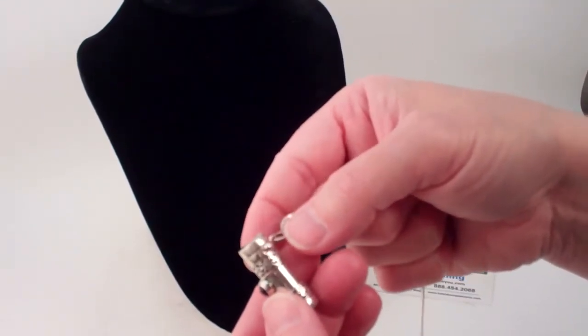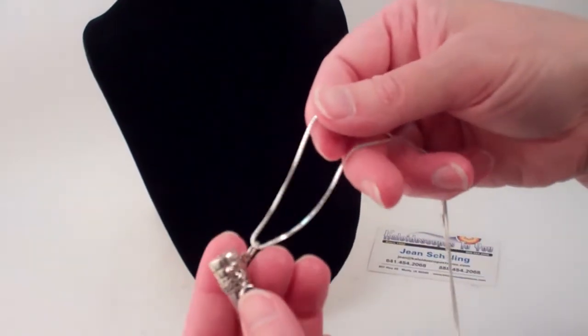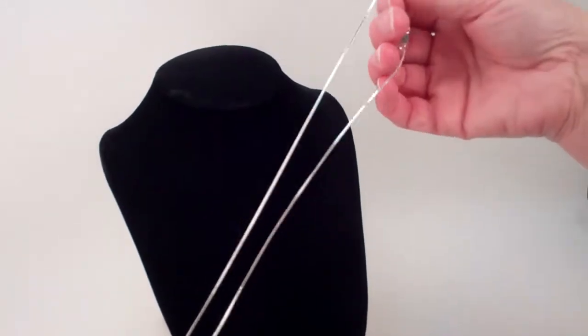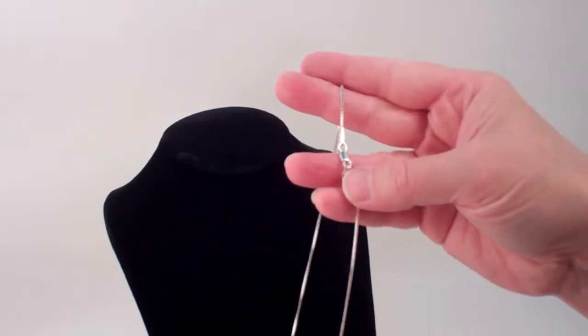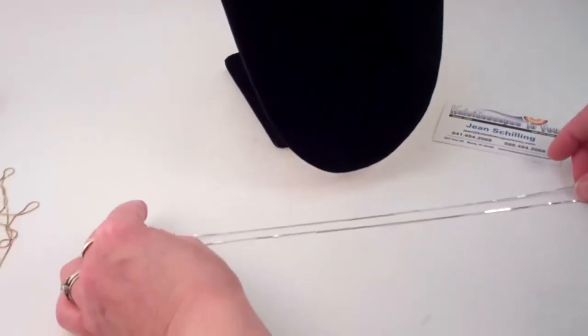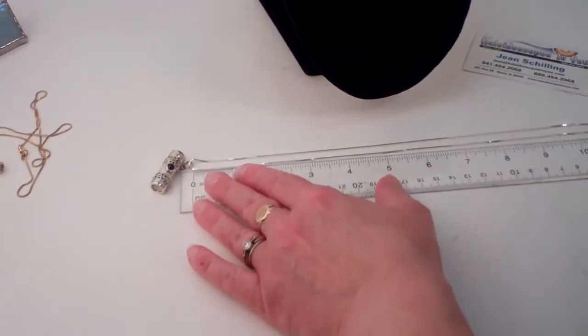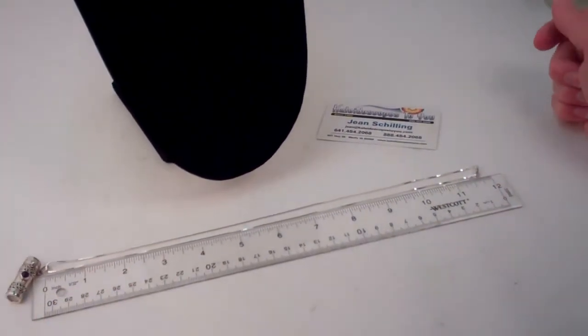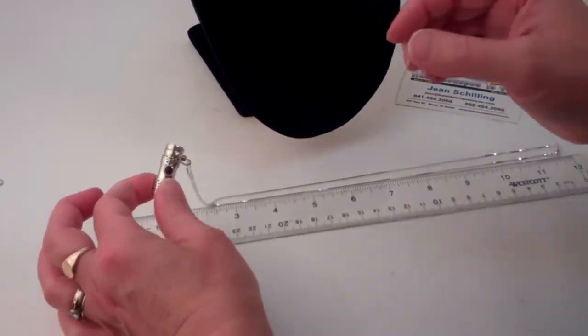The jump ring is very secure and is attached to the collar, and then the chain itself is also in sterling silver with a lobster claw clasp. The length of the chain is a 24-inch sterling silver chain.